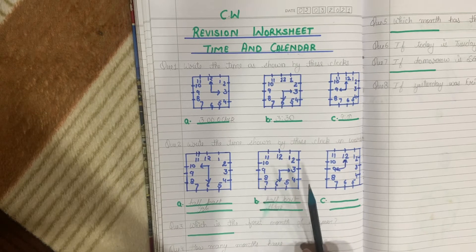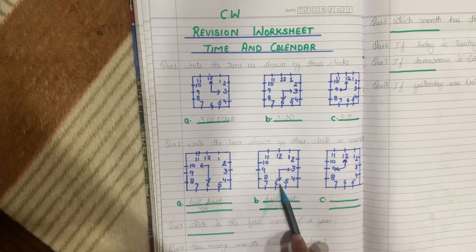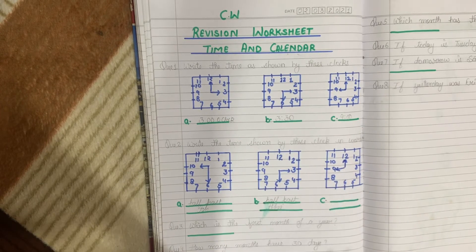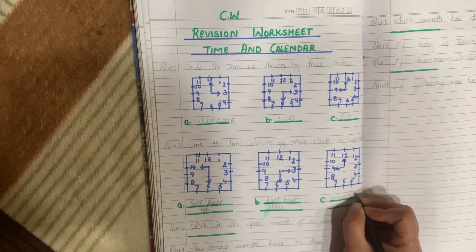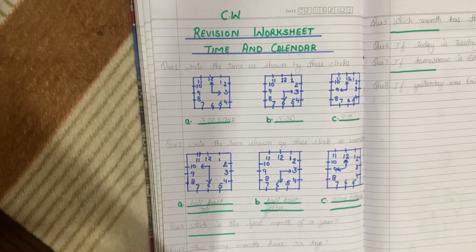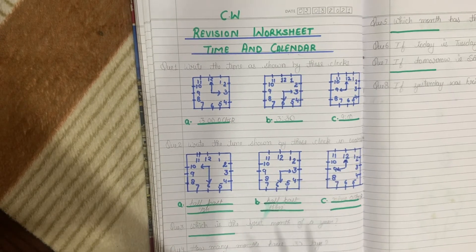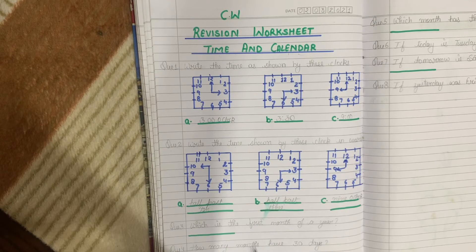What does half past mean? When it is 30 — like the minute hand is on 6. Half past is yaani aadha time ho gaya. Now, if it is like 12:45, the time will be quarter to 1. 12:45 will be quarter to 1. Okay? Done everybody.